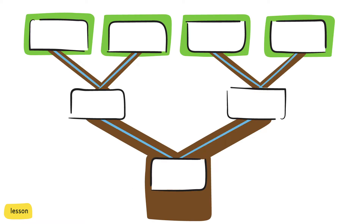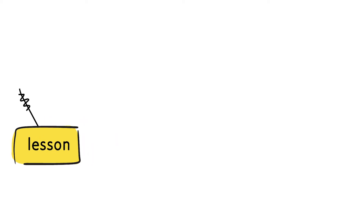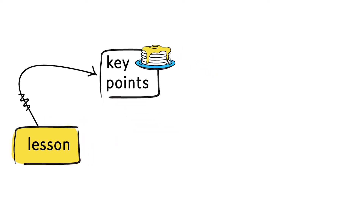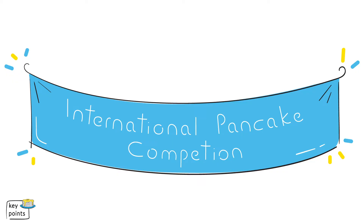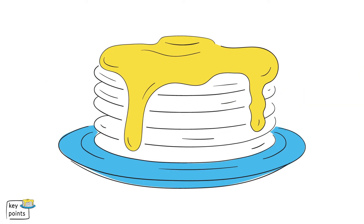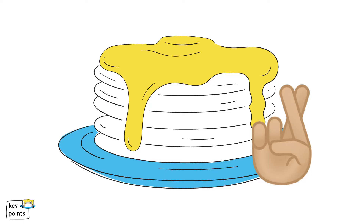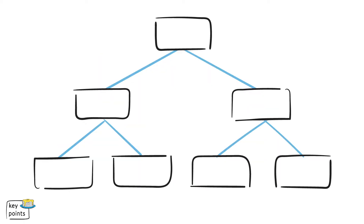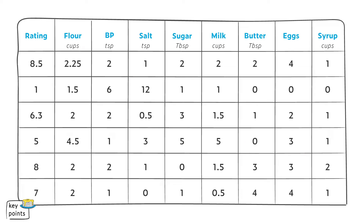Let's talk about this in context of our pancakes. Let's pretend for a moment that there's an international pancake competition and we want to come up with a recipe that will get us the highest rating on a continuous 10-point scale. One approach would just be to use the recipe we have on hand and hope for the best. But instead, what if we put our newly acquired machine learning skills to the test? We can do this by finding hundreds, thousands, or even millions of different pancake recipes